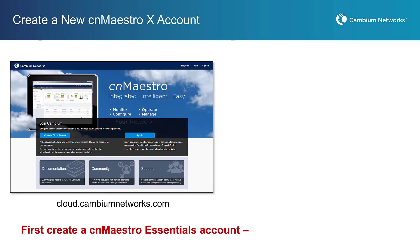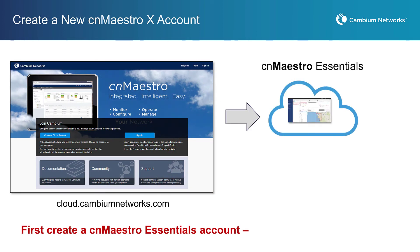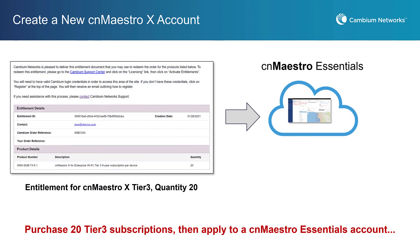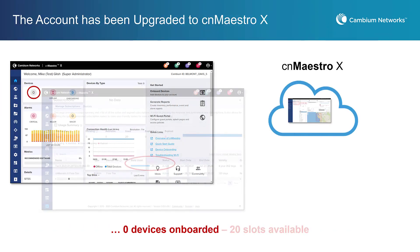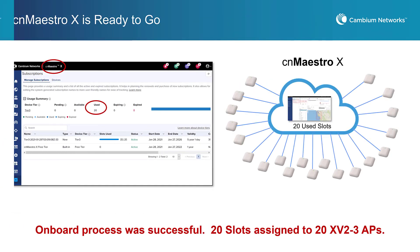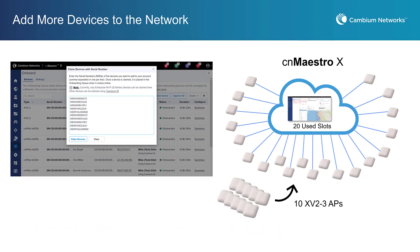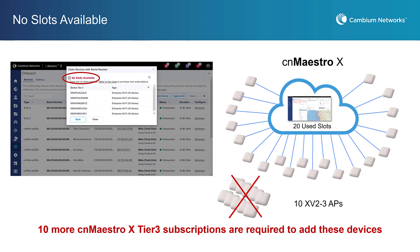The second error condition applies when a new account has no devices yet, or only a handful, and you have not onboarded your entire network. You can upgrade the account ahead of time so that it immediately operates in CNMeisterOx mode when all devices are onboarded. For example, if you expect to onboard 30 Tier 3 devices but initially purchase only 20 Tier 3 subscriptions, your account will upgrade successfully. You can onboard 20 Tier 3 devices, but attempting to onboard a 21st will produce an error saying you don't have enough empty slots. You will be able to operate 20 devices until you purchase additional subscriptions and activate the new entitlement to add 10 or more new slots.